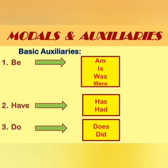Basic auxiliaries have three forms: be forms, have forms, and do forms. For be verb: am, is, was, were — am and is for present tense, was and were for past tense. For have verbs: has and have for present tense, had for past tense. For do verbs: does is present tense and did is past tense.